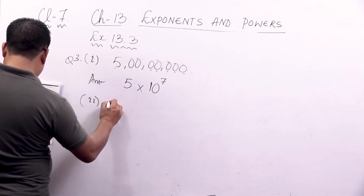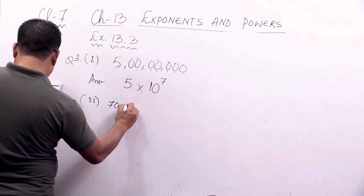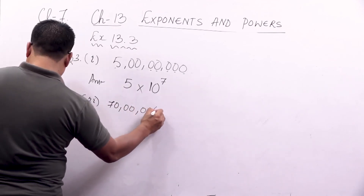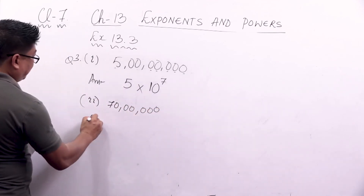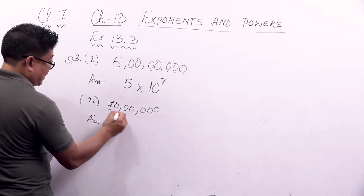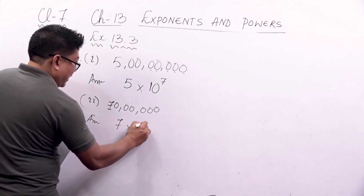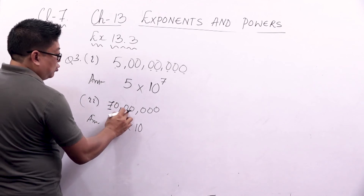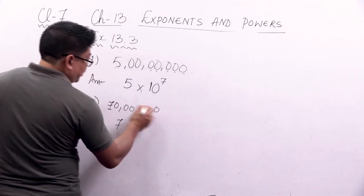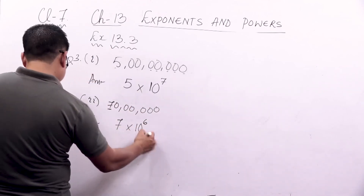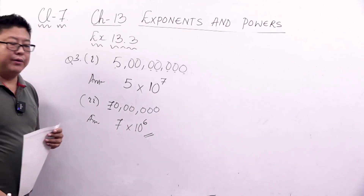Let's look at another example. We have a number starting with 7 — so 7 into 10, and counting the digits after: 1, 2, 3, 4, 5, 6 — six zeros — so I write 10 to the power 6 as the exponent.